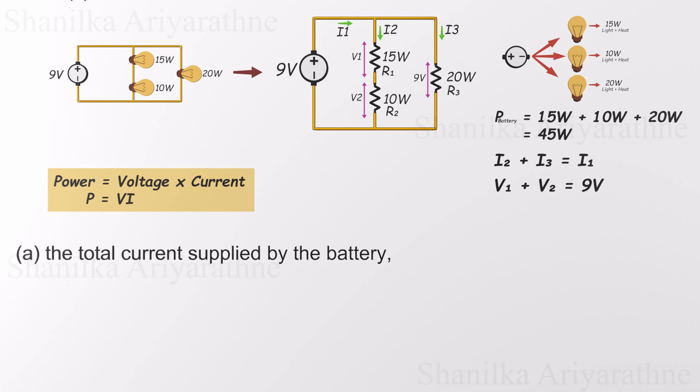Now let's put it to work on our first task. We already know that the battery supplies 45 watts of power and operates at 9 volts. Plugging those values into the formula gives us 45 equals 9 times I. Solving for I, we find that the total current flowing from the battery is 5 amps. That means the battery is sending out 5 amps of current into the circuit to power all three bulbs. It's a clean, straightforward calculation.